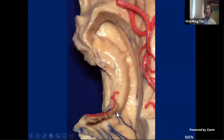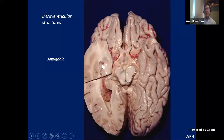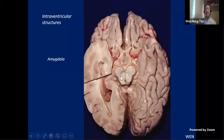Take-home message: anterior segment of uncus equals amygdala; posterior segment equals head of hippocampus. Another intraventricular structure — amygdala. We are talking about the temporal amygdala, because the concept of the extended amygdala system is much larger. From this coronal section, here is the head of hippocampus, the cavity of the temporal horn, and here is a gray matter rounded nucleus — the amygdala. The amygdala is located ahead of the head of hippocampus, and is actually the anterior wall of the temporal horn. Take-home message: amygdala is the anterior wall of the temporal horn.